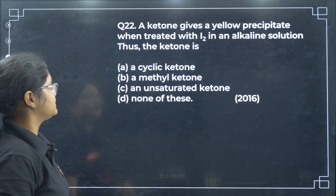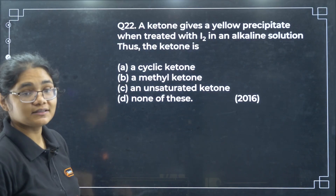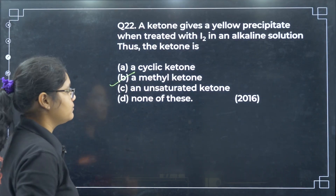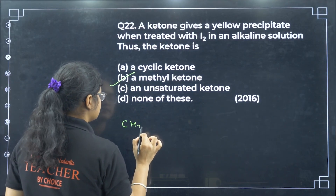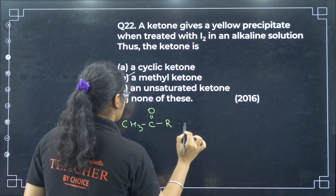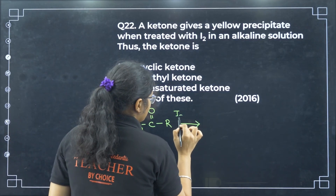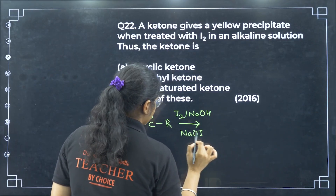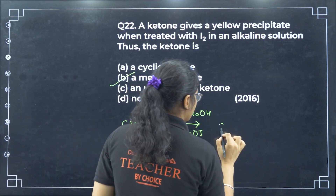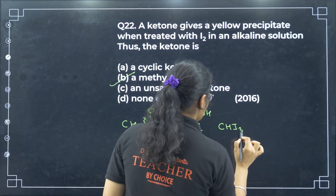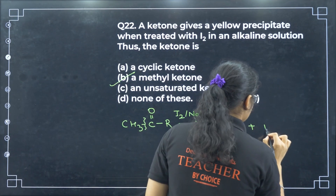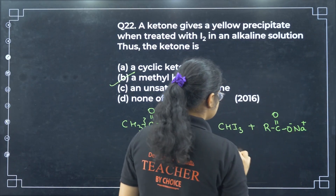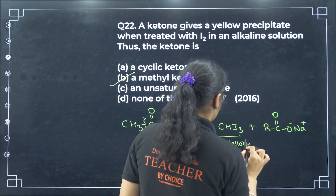A ketone gives a yellow precipitate when treated with I2 in alkaline solution. Methyl ketones give a positive iodoform test. If we have CH3C double bond O, R and treat it with I2 and NaOH (which can be written as NaOI), the bond breaks, CH3 converts to iodoform (yellow precipitate) and the rest converts to a carboxylate salt.